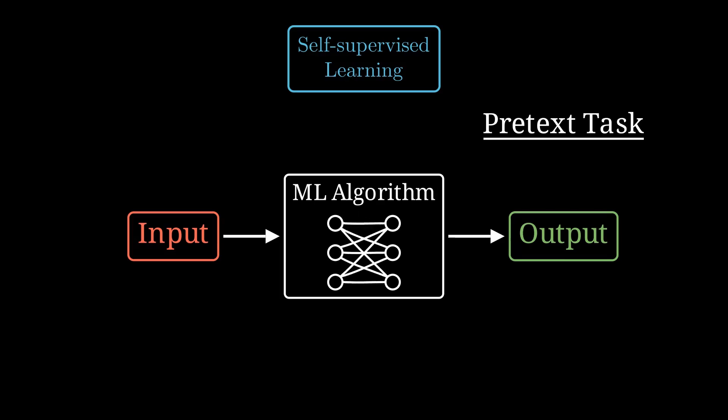By training the model on this fake task, we hope that it will learn some useful representations of the data that we can use later for our real problem. Why do we need self-supervised learning when we already have supervised learning? Well, here's the thing.